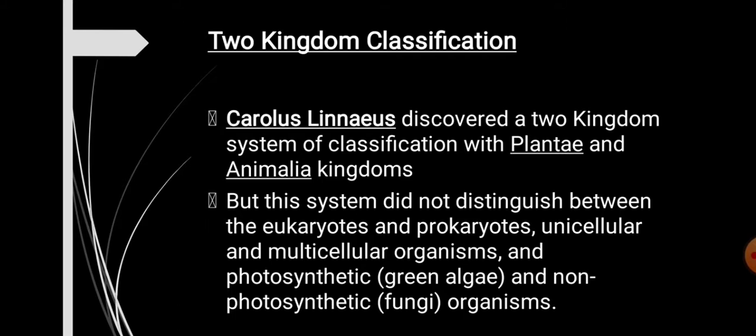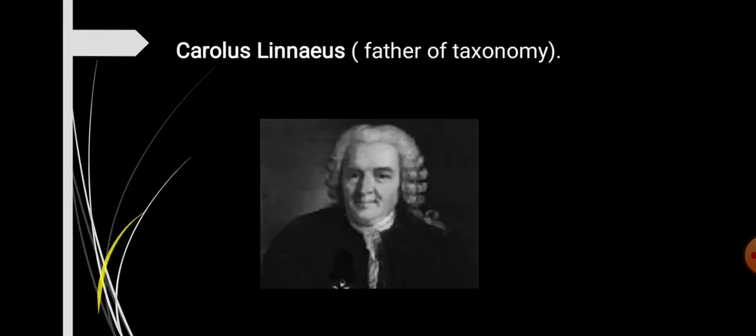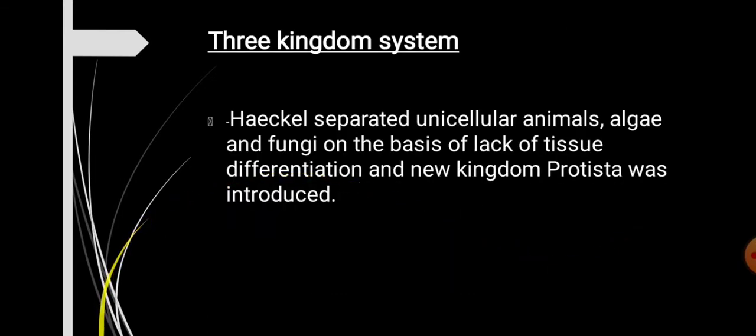The two-kingdom system also did not distinguish between unicellular and multicellular organisms, and organisms were not differentiated based on mode of nutrition into photosynthetic and non-photosynthetic. Carlos Linnaeus is called the father of taxonomy — taxonomy being the branch of science concerned with the scientific grouping of organisms. Though his two-kingdom classification was used for a long time, it proved to be an inadequate system and was soon replaced.